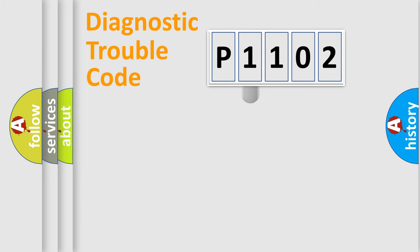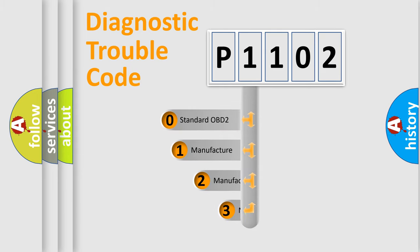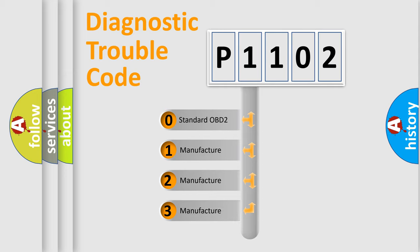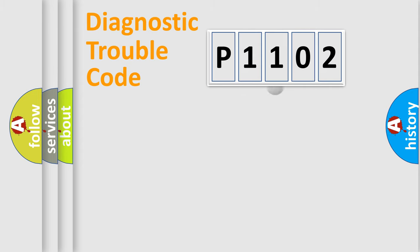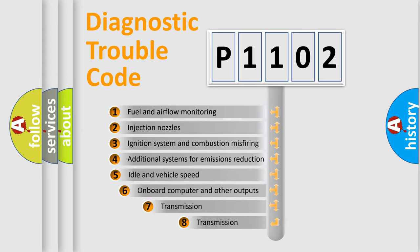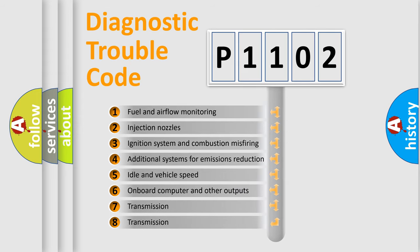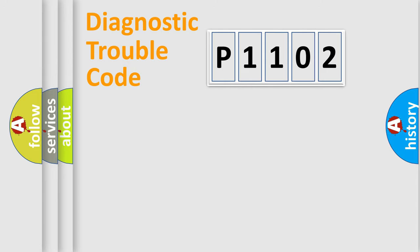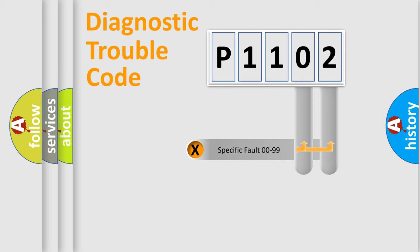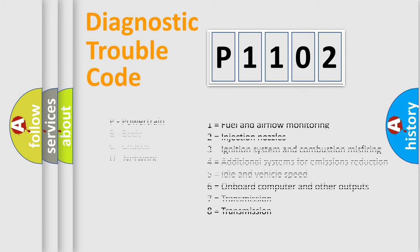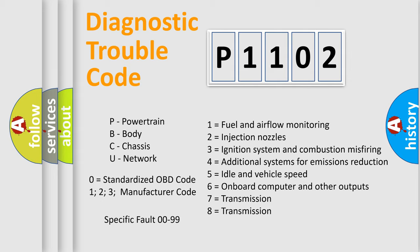This distribution is defined in the first character of the code. If the second character is expressed as zero, it is a standardized error. In the case of numbers 1, 2, or 3, it is a manufacturer-specific error expression. The third character specifies a subset of errors. This distribution is valid only for the standardized DTC code, and the last two characters define the specific fault of the group.